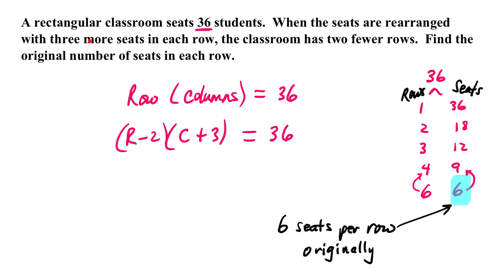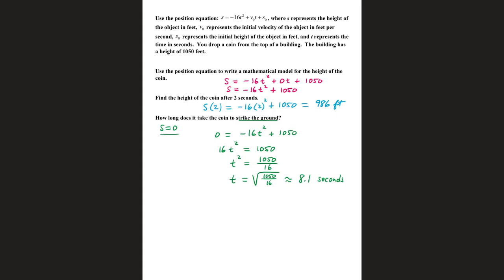The only pairs that we can use where when you add three seats to a row or column, it's a rectangular shape. When you add three seats to each row, you have two fewer rows. This is the only pair that fits that description: two fewer and three more. So after the adjustment, you have four rows of nine seats. But before, you originally have six seats and six rows.